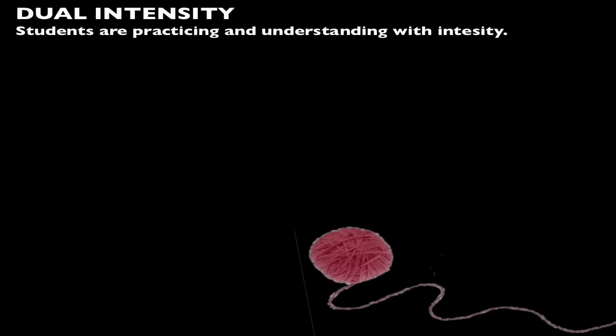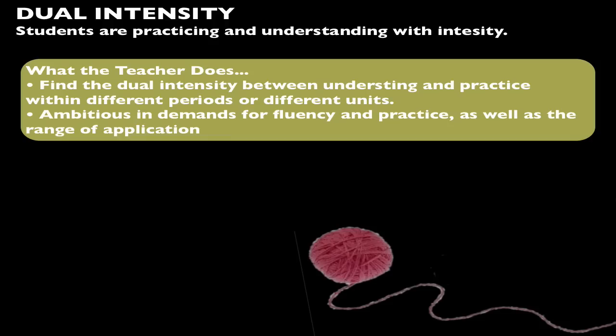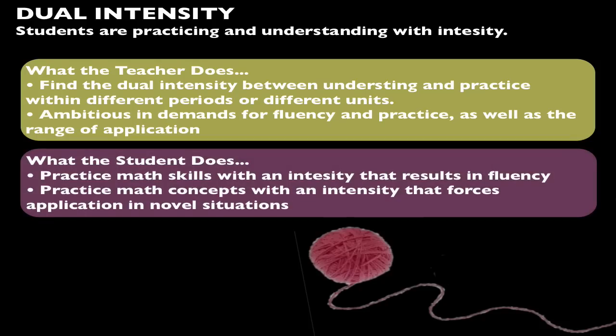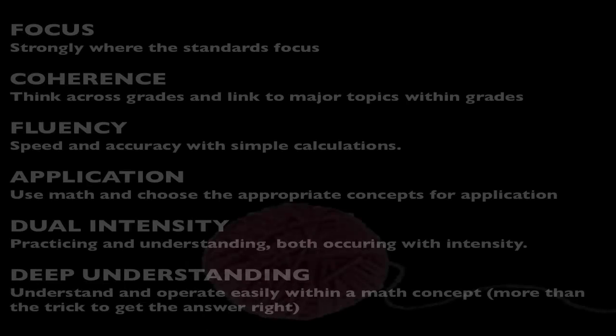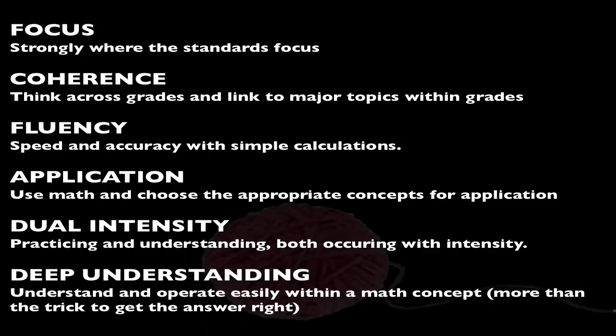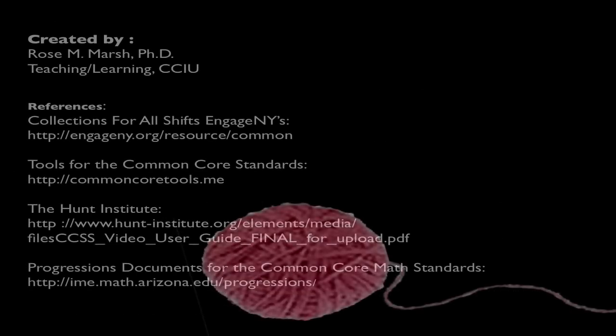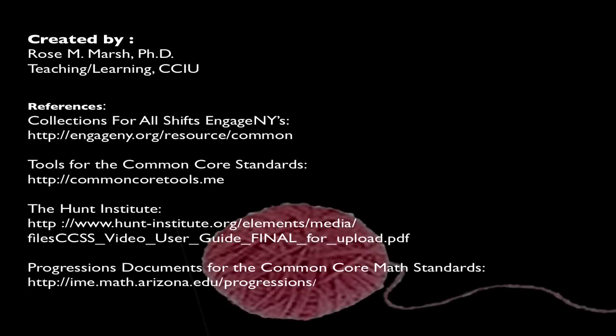Dual intensity. Students need to both practice and understand the mathematics. There is more than just a balance between these priorities in the class — both are occurring with intensity. Students need to be practicing math skills with an intensity that results in fluency. To act: ensure you address mathematical procedures daily with practice and through problem-solving and application. These are the six major shifts in curriculum and instruction to align with the Common Core.